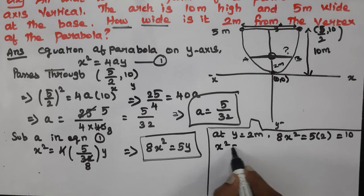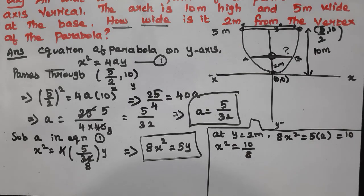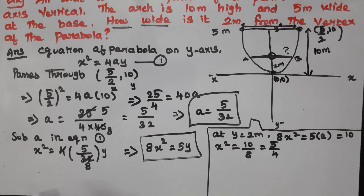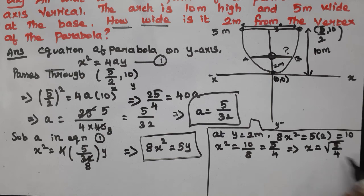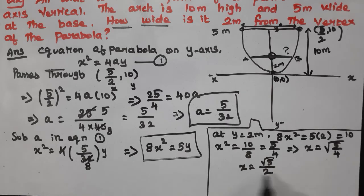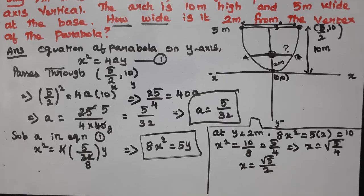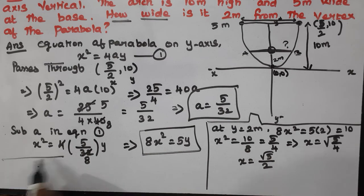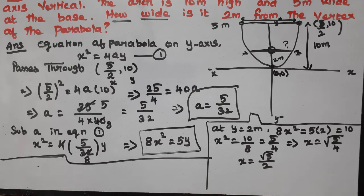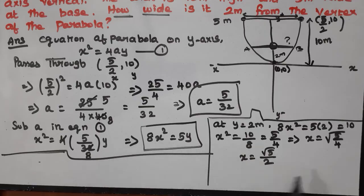So x² = 10/8, which equals 5/4. Therefore x = √(5/4) = √5/2. So x is equal to √5/2.